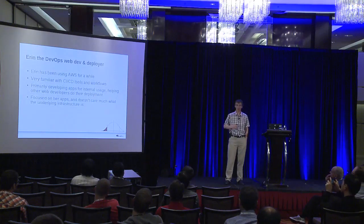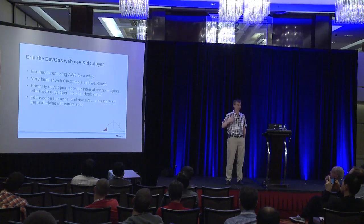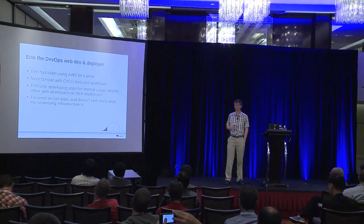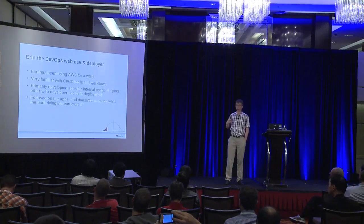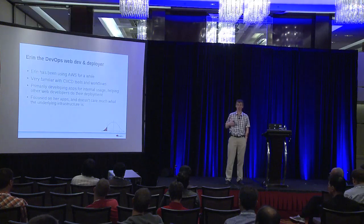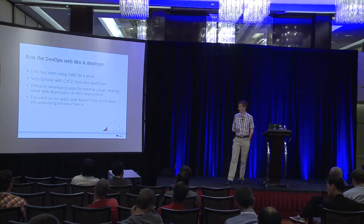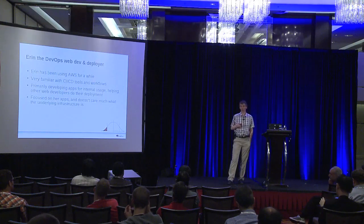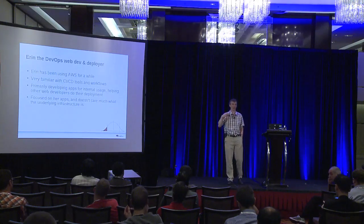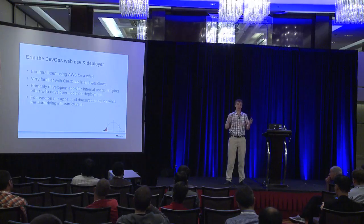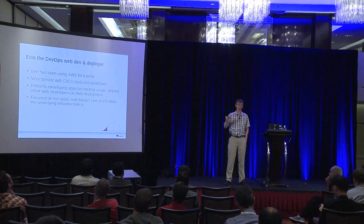Erin works in a bigger organization with the development team — she's the person who does deployment operations. She's been using AWS for a long time and is very familiar with continuous integration and continuous deployment tools. Her primary use case is taking internally developed applications and getting them onto the cloud, bringing elastic infrastructure knowledge into an organization. She's focused on her app and doesn't much care what the underlying infrastructure is, as long as it supports the features she needs — load balancing, database as a service — and she can use the deployment tools she's always used.